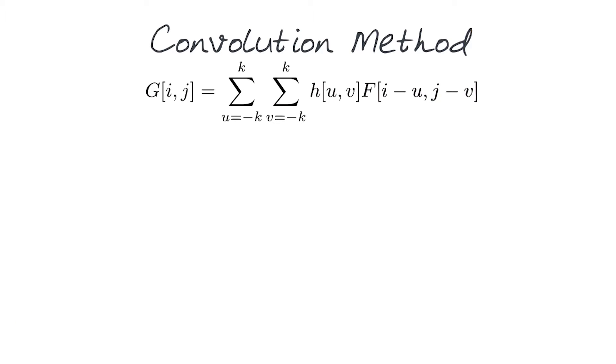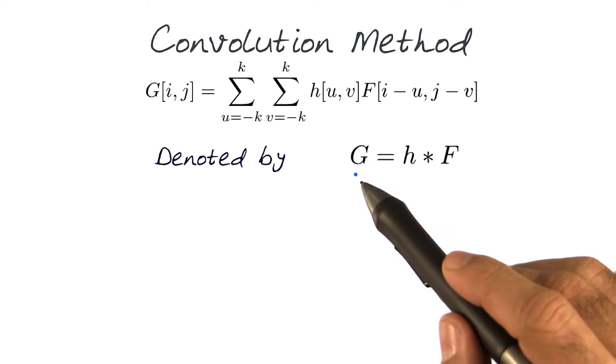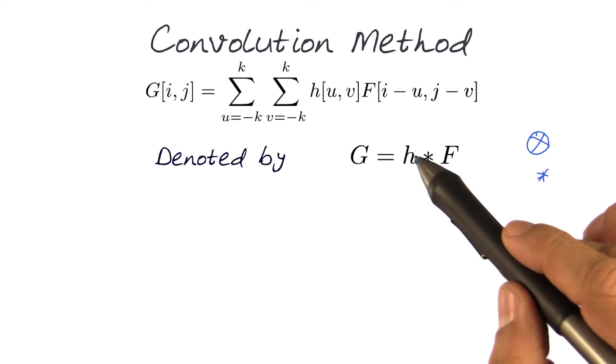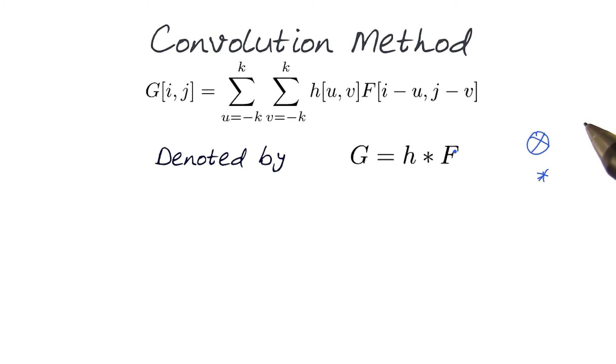One thing to note in here is we would denote this by a symbol. So now rather than using the symbol which was this for cross correlation, we use a star for doing convolutions. Again, the h kernel and f, and it basically allows you to generate an input or output g.